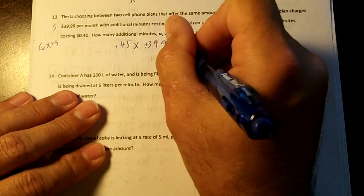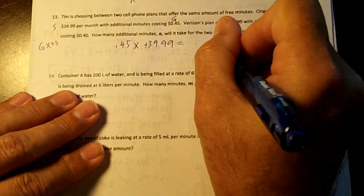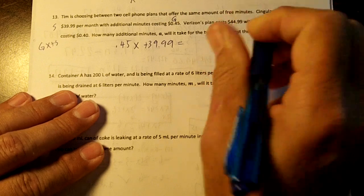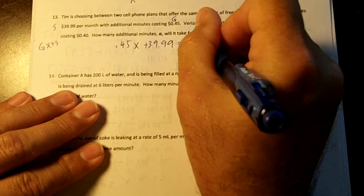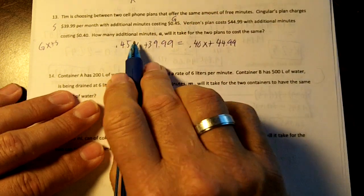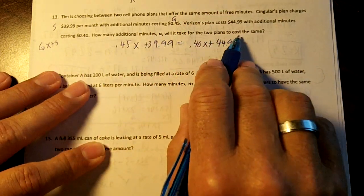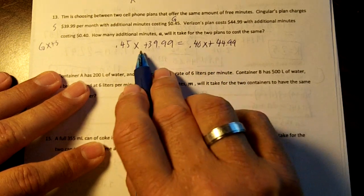Verizon's plan costs $44.99. That's your starting number. With additional minutes costing $0.40, that's our growing number. How many additional minutes will take for the two plans to equal? So we're going to solve this for X.